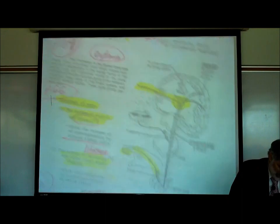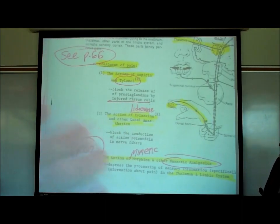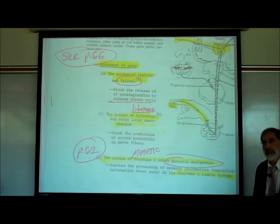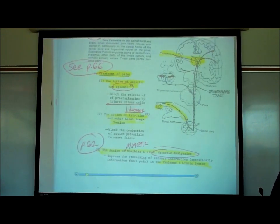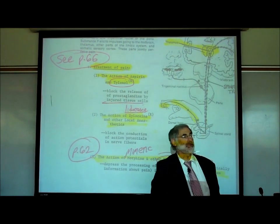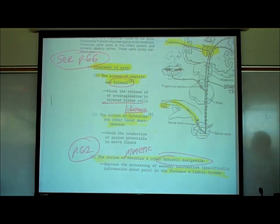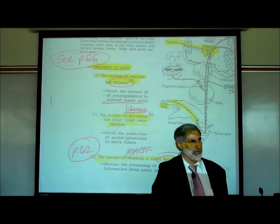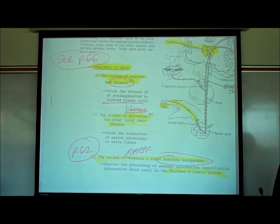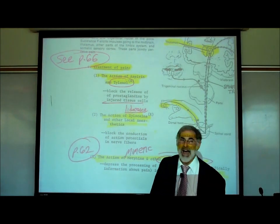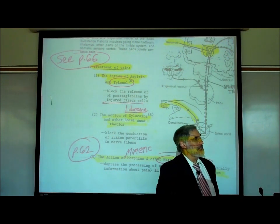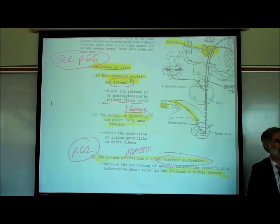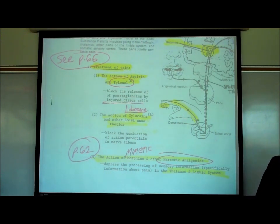Let's talk about the treatment of pain on page 84. The thalamus receives almost all sensory information. There are three pharmacologic approaches to controlling pain. The first uses aspirin, Tylenol, or Advil — they block the enzyme that forms prostaglandins, stopping injured cells from releasing prostaglandins, resulting in less activation of pain sensory neurons. They all work the same way.